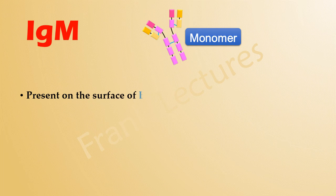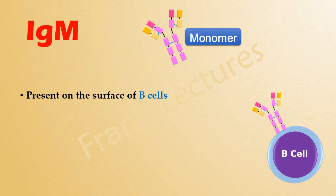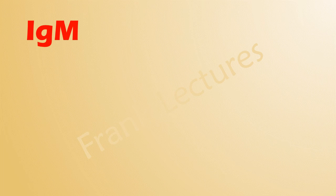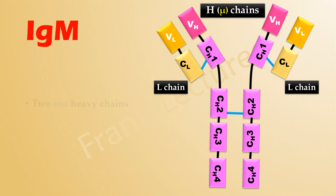As a monomer, IgM is present on the surface of B cells. This IgM is known as membrane-bound immunoglobulin M.